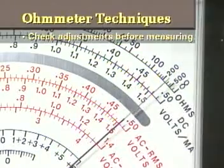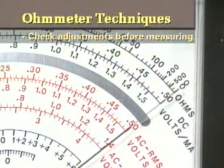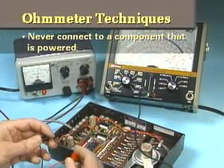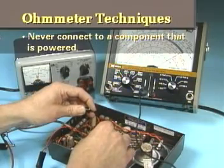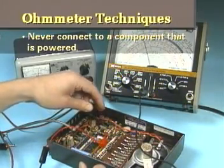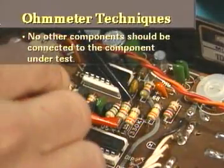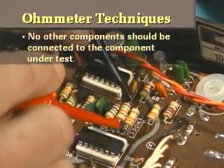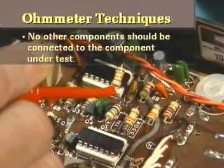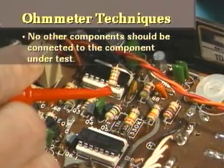With the leads separated, infinity should be indicated. An ohmmeter should never be connected to a component or circuit that is powered, since an ohmmeter supplies current into the component or circuit it is measuring. If the component or circuit under test is not completely disconnected or isolated from power, the meter could be damaged and incorrect measurements will result.